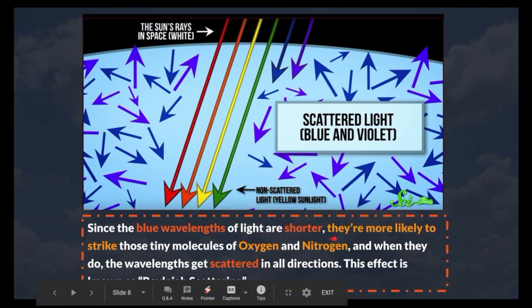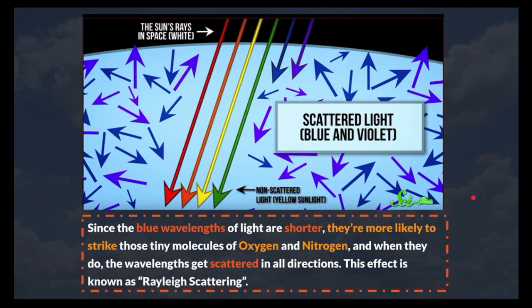Since the blue wavelengths of light are shorter, they're more likely to strike those tiny molecules of oxygen and nitrogen. And when they do, the wavelengths get scattered in all directions. Now, this effect is known as Rayleigh scattering.